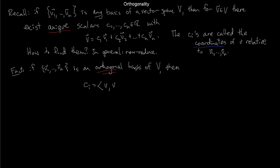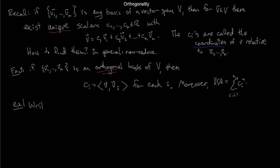For an orthonormal basis, Ci = V·Vi, that's all you have to do. And the norm of V is just the square root of the sum of squares of the coordinates: ||V||² = C1² + C2² + ... + Cn².